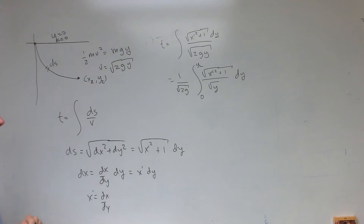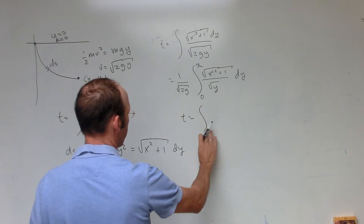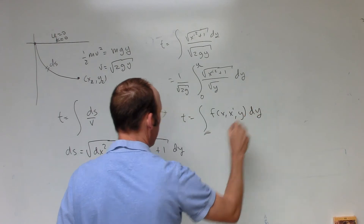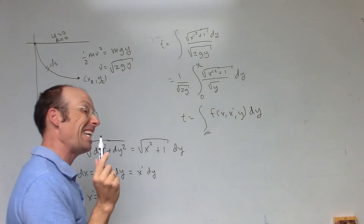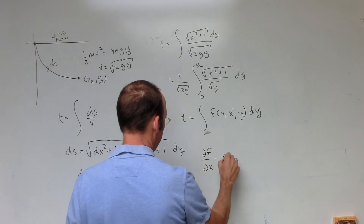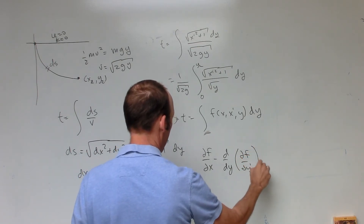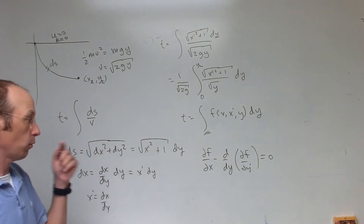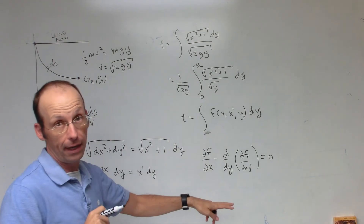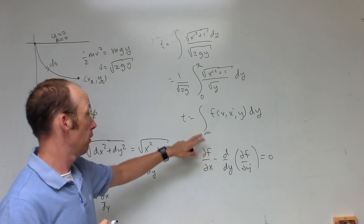So now the question is: what's the relationship between x and y such that this integral, from 0 to y2, is a minimum? It turns out that if I get this in the form T equals the integral from y1 to y2 of some function f(x, x', y) dy, then we get a stationary solution — which means either a max or a min — if the following is true: the partial of f with respect to x, minus the derivative with respect to y of the partial of f with respect to x', equals zero. That's the Euler equation. I skipped the derivation — it's not trivial.